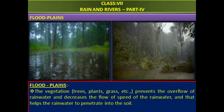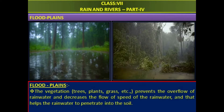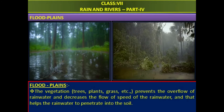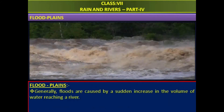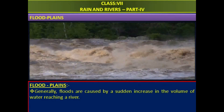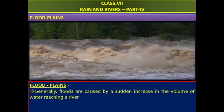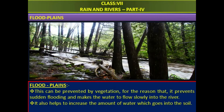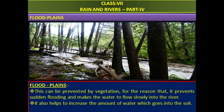Vegetation — that is, trees, plants, grass, etc. — prevents the swift flow of rainwater, decreases the speed of the rainwater, and helps the rainwater to penetrate into the soil. Generally, floods are caused by a sudden increase in the volume of water reaching a river. This can be prevented by vegetation, as it prevents sudden flooding and makes the water flow slowly into the river. It also helps to increase the amount of water which goes into the soil.